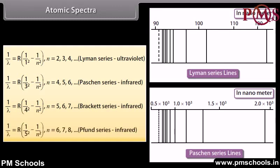The Pfund series is given by: 1/λ = R(1/5² − 1/n²), where n = 6, 7, 8, 9, and so on.